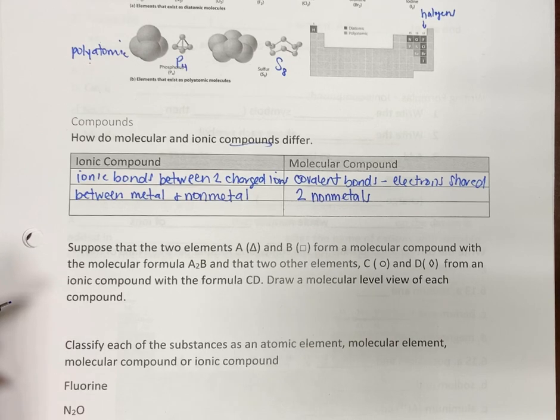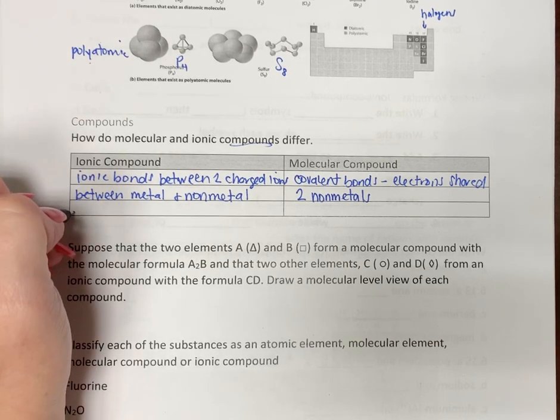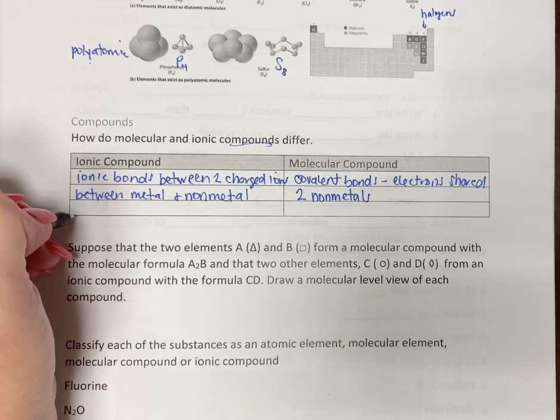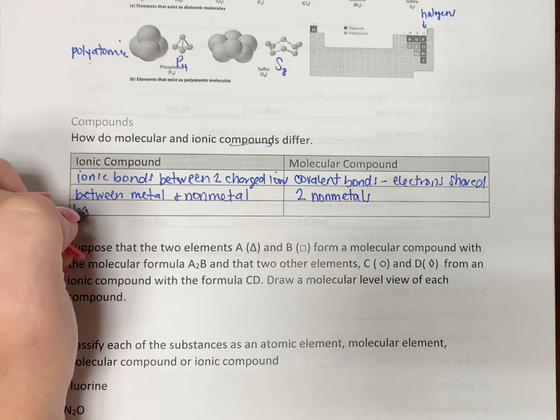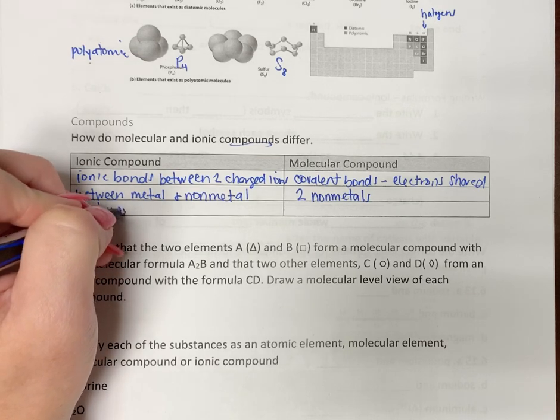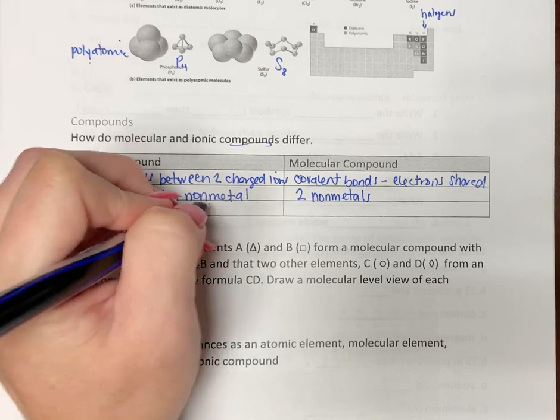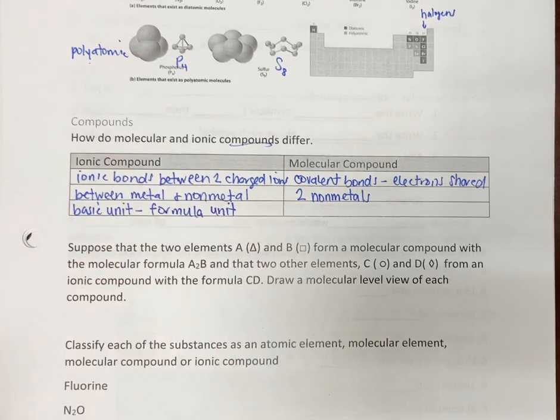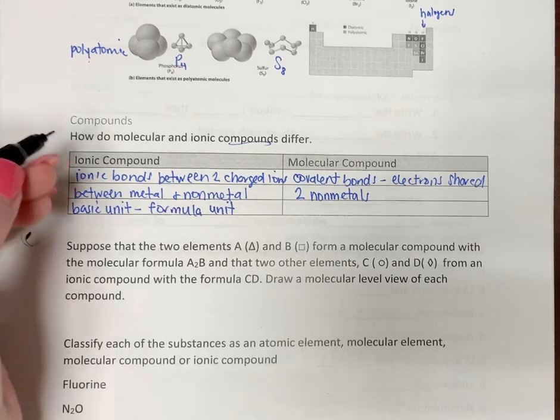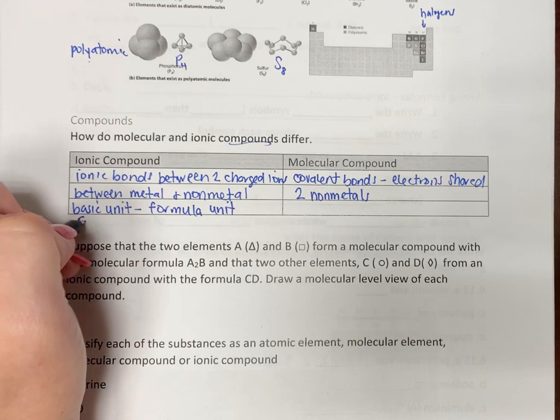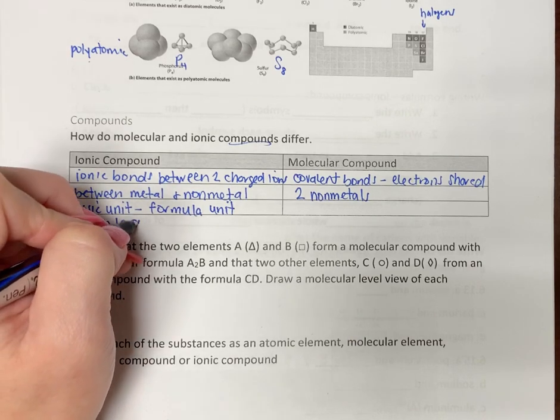Ionic compounds, we'll come back to this later in 180, but the basic unit of an ionic compound is actually called a formula unit. For convention's sake, we'll call it a molecule, but it's technically a formula unit.